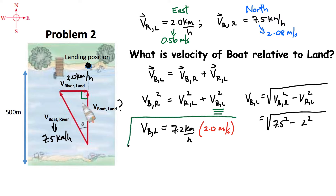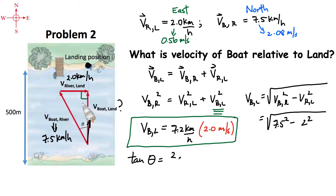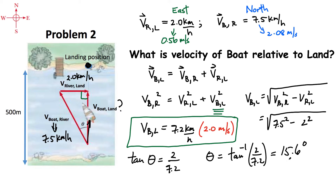The next thing to find is the angle at which I have to direct the boat to have the velocity going straight across. Using tangent of theta again — opposite over adjacent — the opposite is 2 and the adjacent is 7.2. So theta equals inverse tangent of 2 over 7.2, which gives an angle of approximately 15.6 degrees. This is similar to problem one's 15 degrees but a little bigger — you have to angle the boat a bit more upstream.